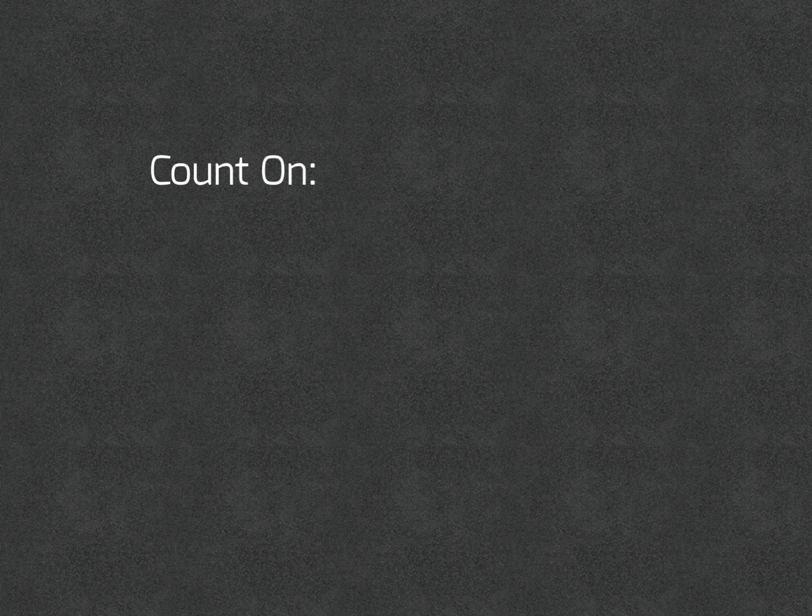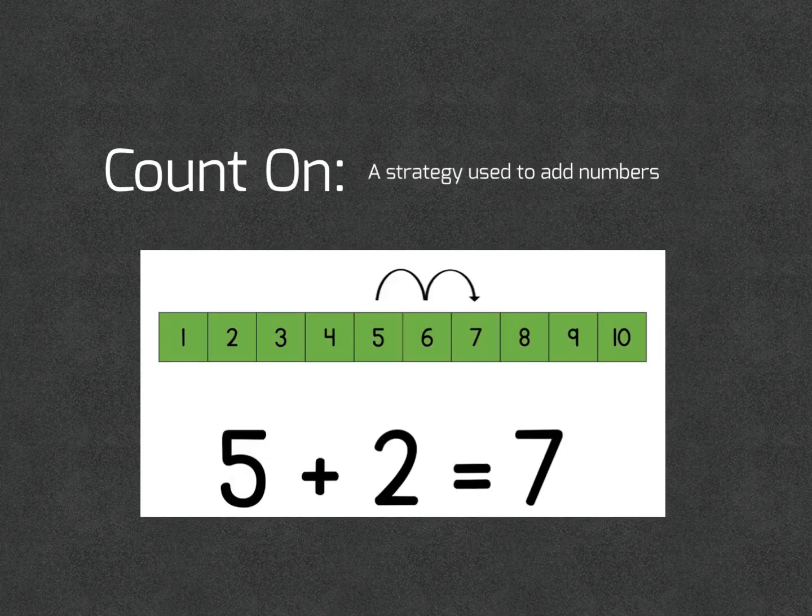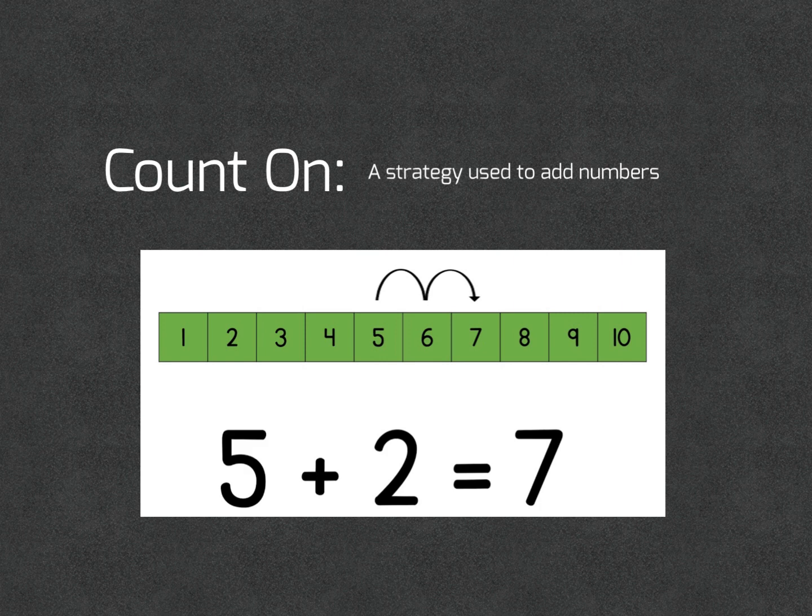Count on: Count on is a strategy used to add numbers. For example, five plus two is seven. Five, six, seven.